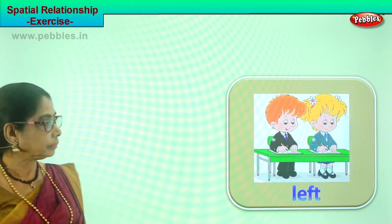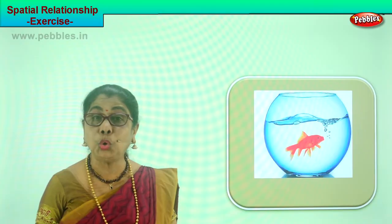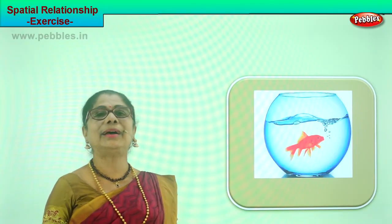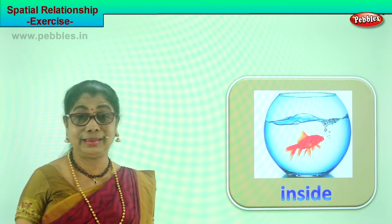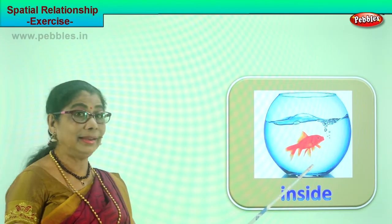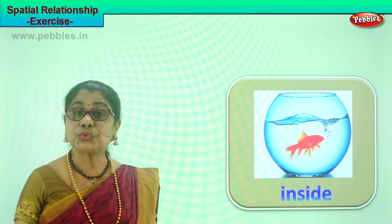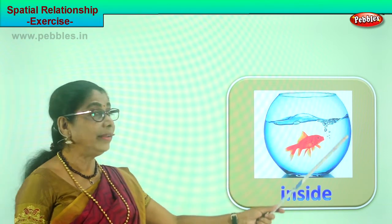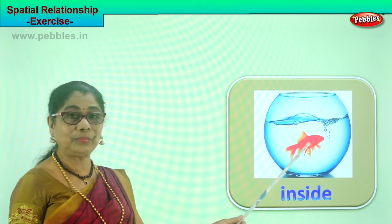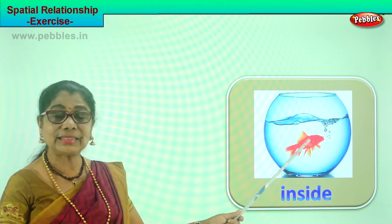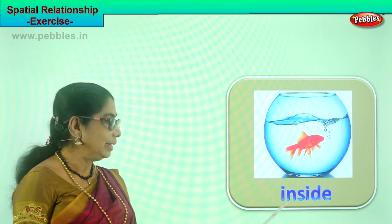Let's look at another picture. What do we have here? It's a bowl with a fish inside. What are we learning? Inside and outside. What is inside? A goldfish swimming about in a bowl, very happy, swimming all about inside. Where is the fish? Inside the bowl, in the water.